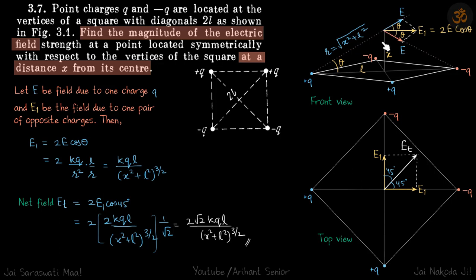You can see vertical components of this pair of charges will cancel out. We are only talking about plus Q and minus Q. Due to plus Q it's here, due to minus Q it's here, vertical components will cancel out.